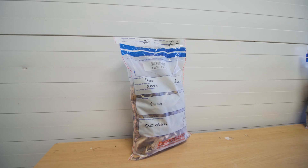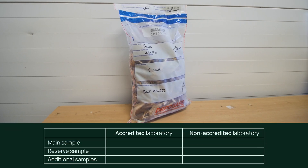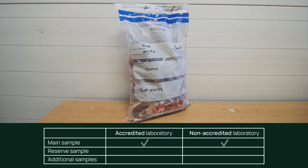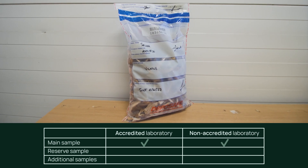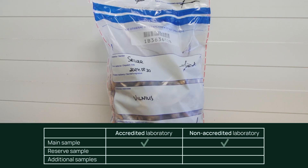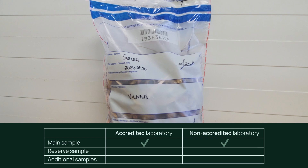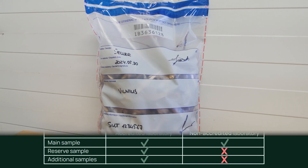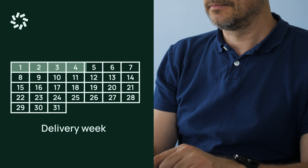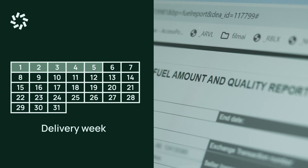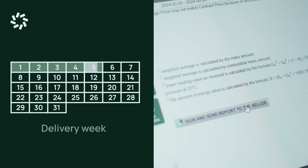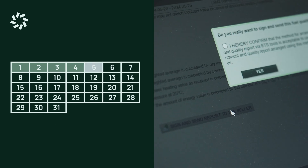The main sample may be tested either in an accredited or non-accredited laboratory, while the reserve and additional samples must be tested only in an accredited laboratory. The buyer must provide data of the tested sample quality report to the seller via the electronic trading system within seven business days from the end of the delivery week.